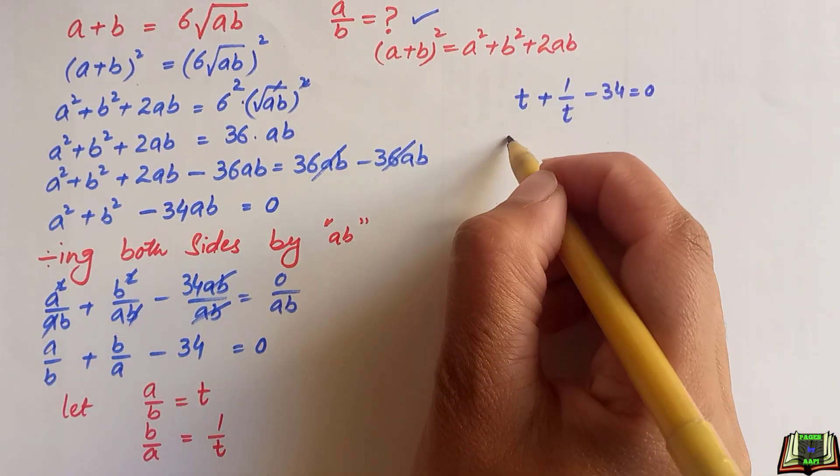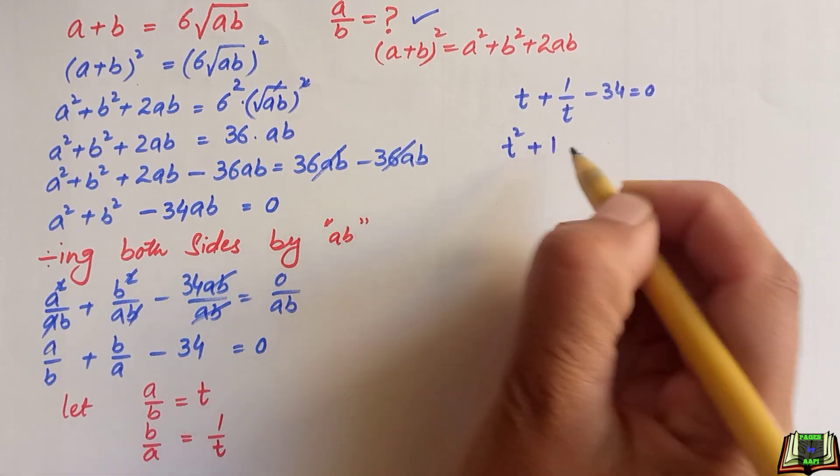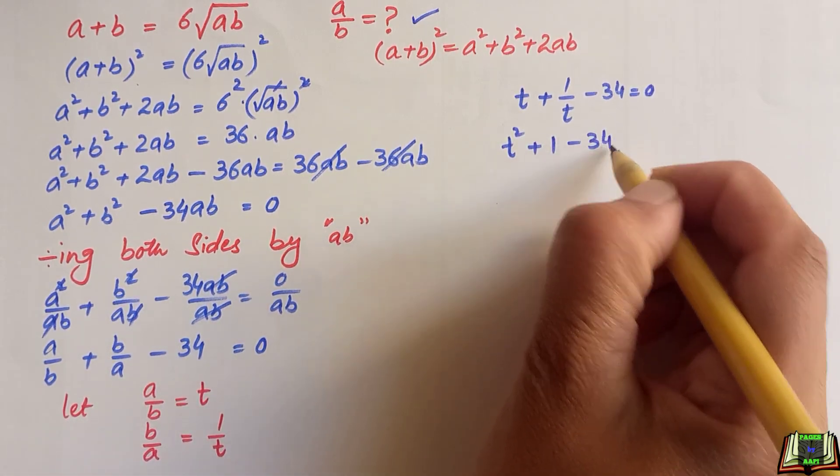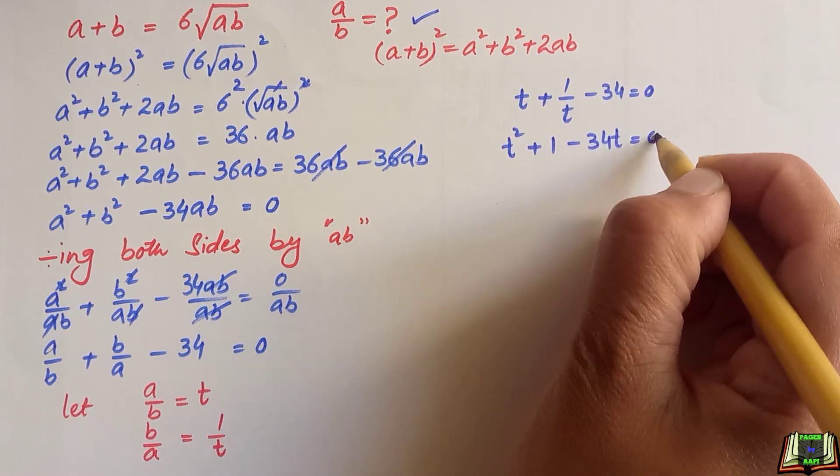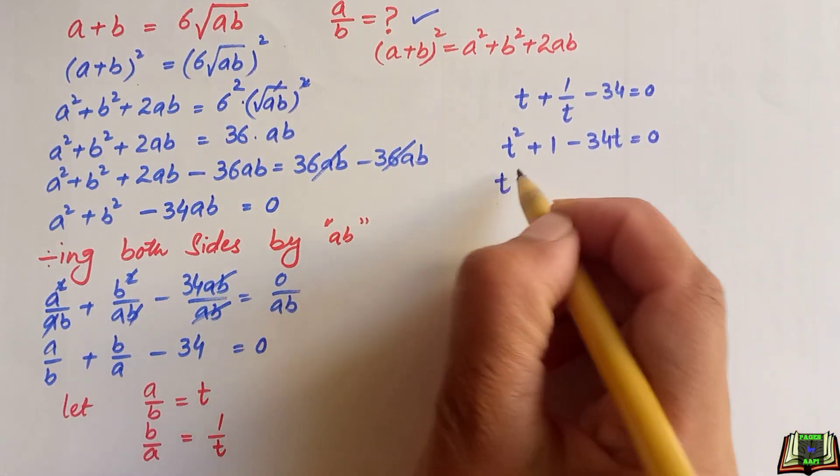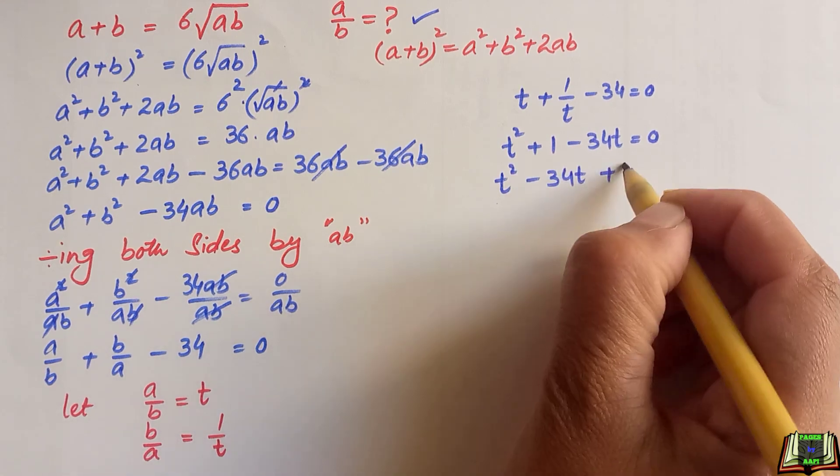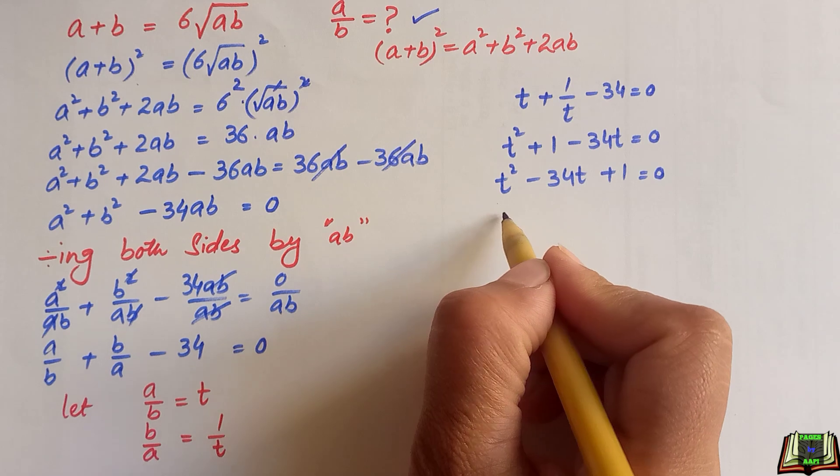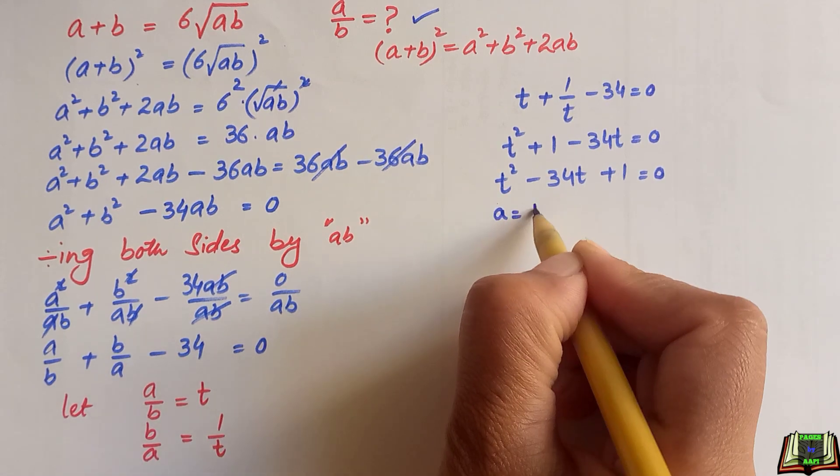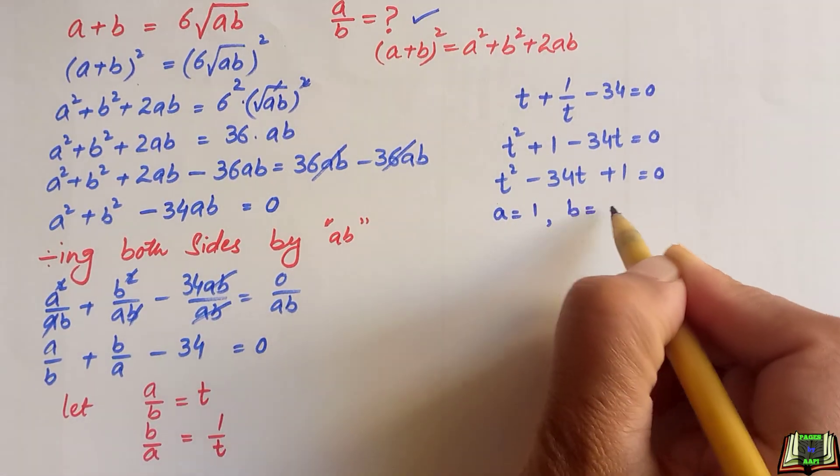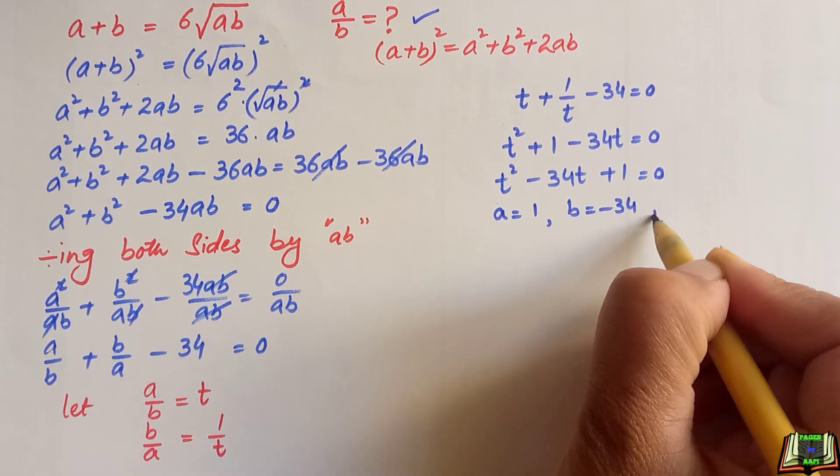Its LCM is t so t square plus 1 minus 34t and 0 times t is 0. After rearranging, t square minus 34t plus 1 is equal to 0 which is the form of quadratic equation. Here, a is equal to 1, b is equal to minus 34, c is equal to 1.